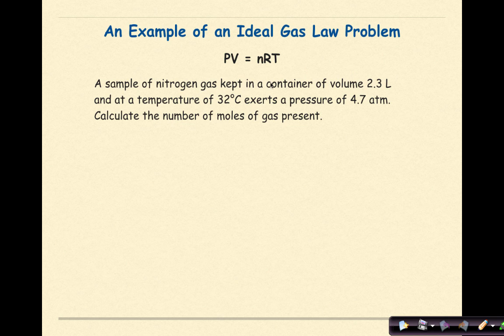Let's see some examples of the ideal gas law problem. A sample of nitrogen gas kept in a container of volume 2.3 liters and at a temperature of 32 degrees Celsius exerts a pressure of 4.7 atmospheres. Calculate the number of moles of gas present. So the first thing we're going to do is write our formula: PV equals nRT.